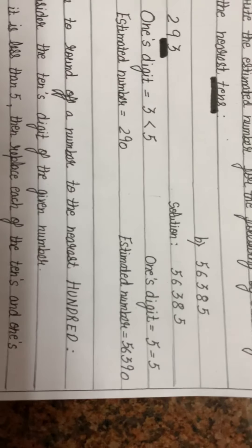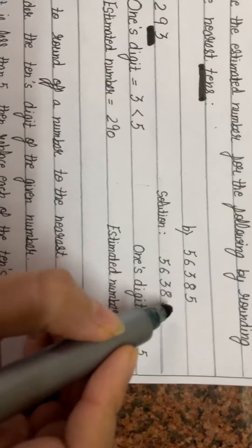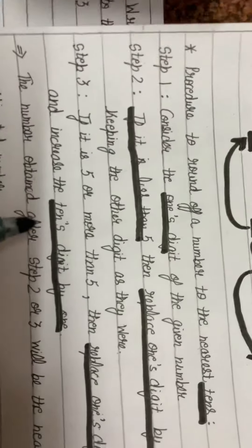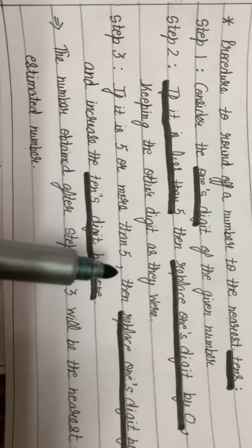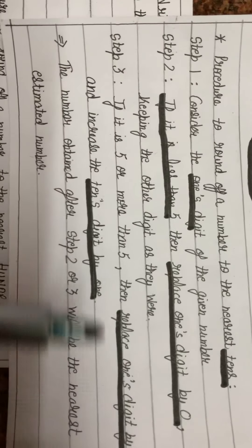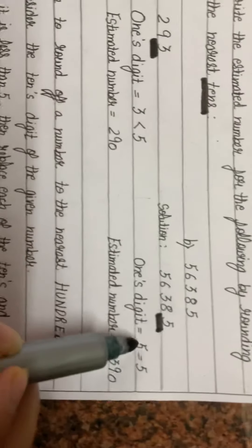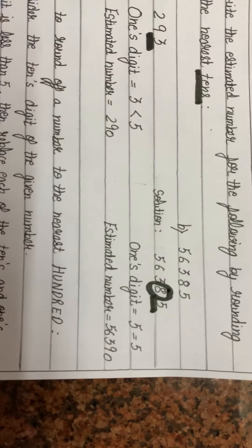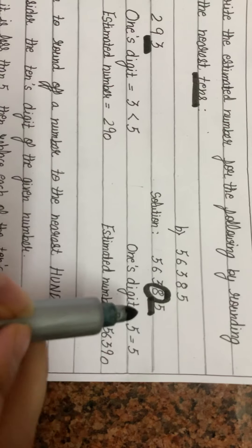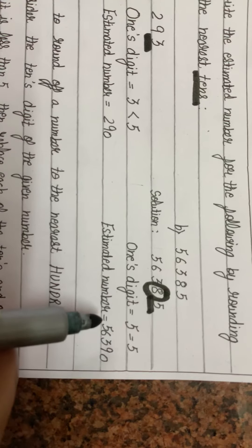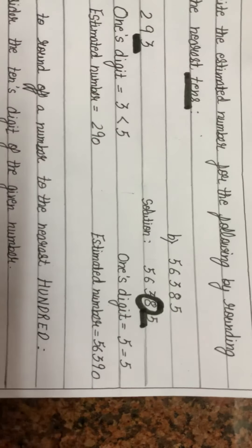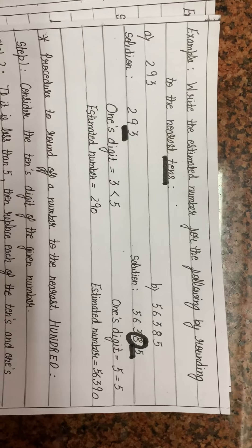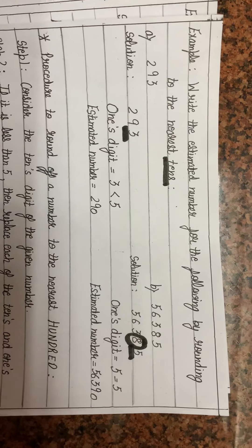Now consider 56,385. The digit at ones place is 5, which is equal to 5. We follow step 3: if it is 5 or more than 5, replace ones digit by 0 and increase the tens digit by 1. The tens digit is 8, so 8 plus 1 is 9. The estimated value is 56,390. This is how to round off to the nearest tens.